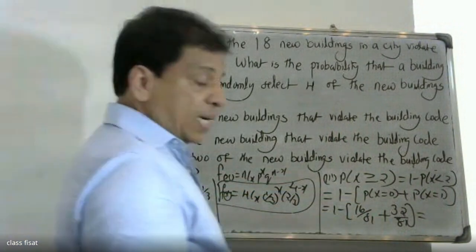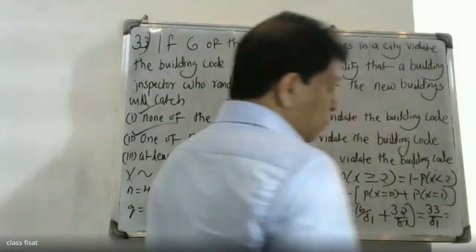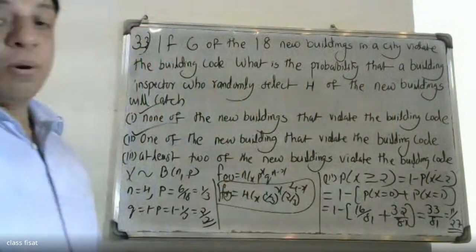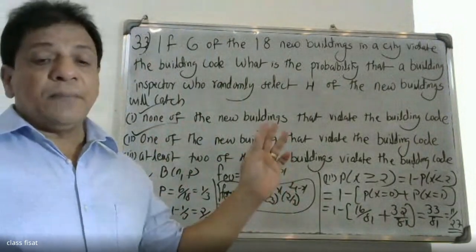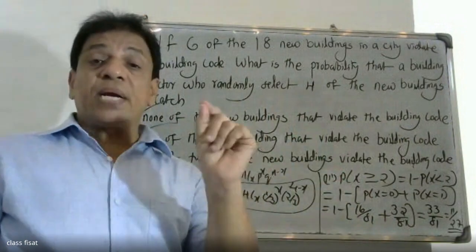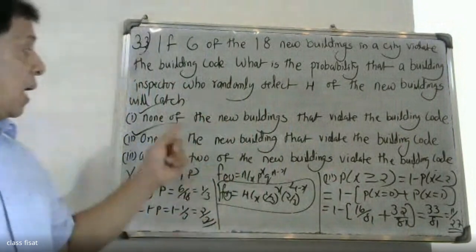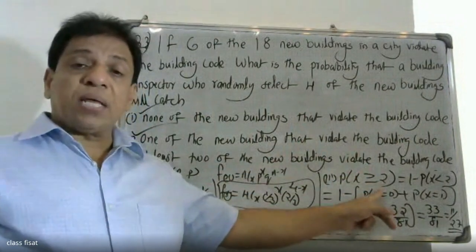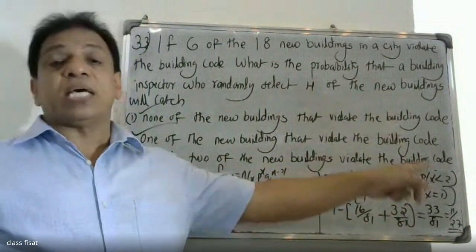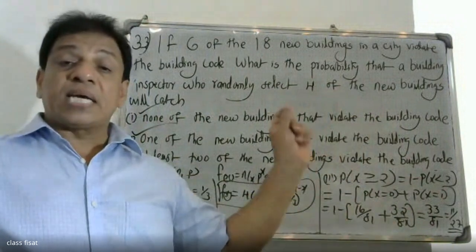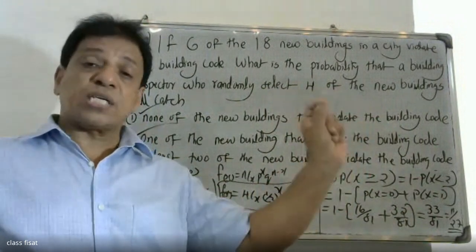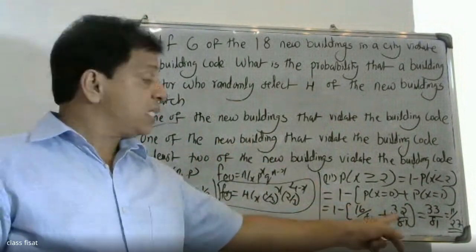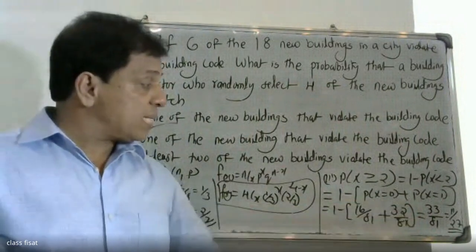We simplify the answer. The probability of x greater than or equal to 2 equals 1 minus the probability of x less than 2, that is x equals 0 and x equals 1. Substituting, we get 1 minus (16/81 plus 32/81). Simplifying, the final answer is 33/81. Thank you.